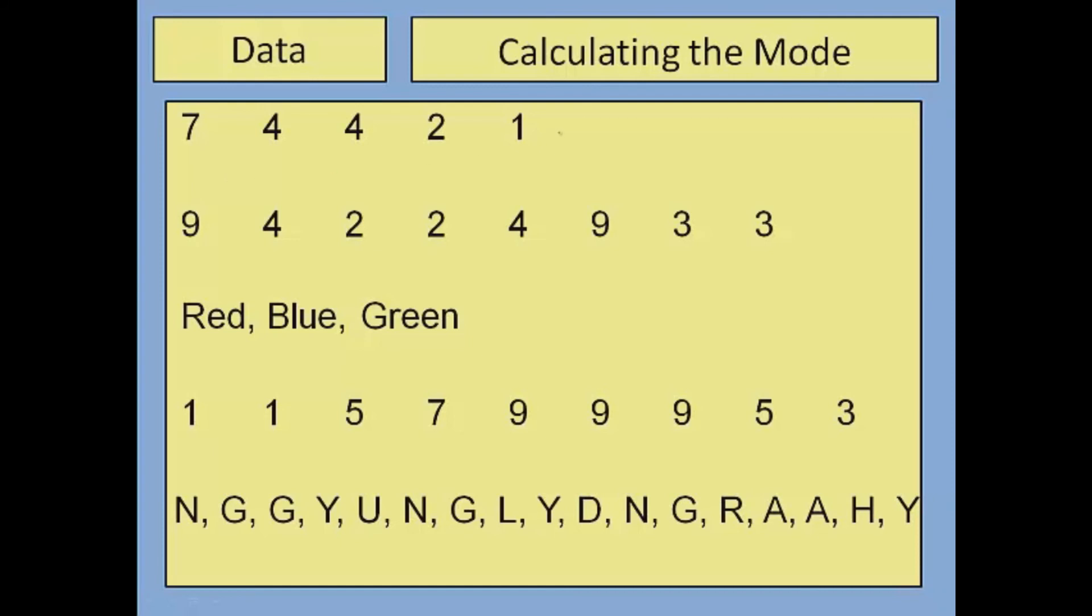Okay, here are the answers. The mode for the first question equals four because four appears twice and every other number appears once.